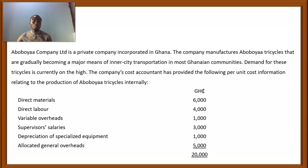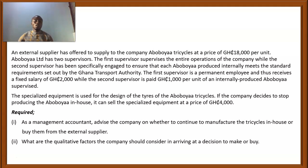The costs include direct materials, direct labor, variable overheads, supervisor salaries, depreciation of specialized equipment, and allocated general overheads. An external supplier has offered to supply Abubo Yar tricycles at a price of 18,000 Ghana cedis per unit.